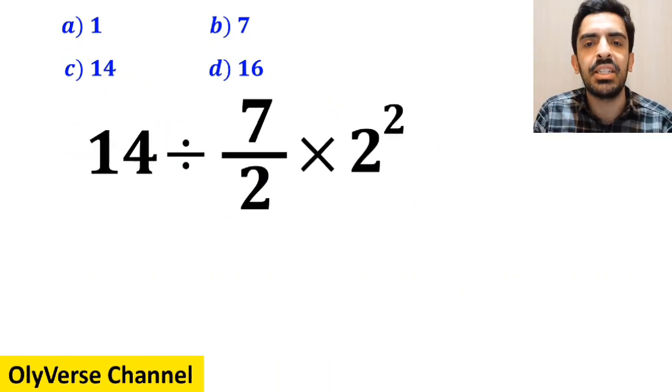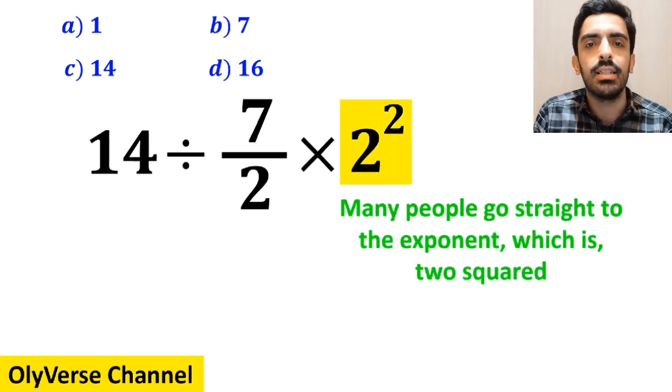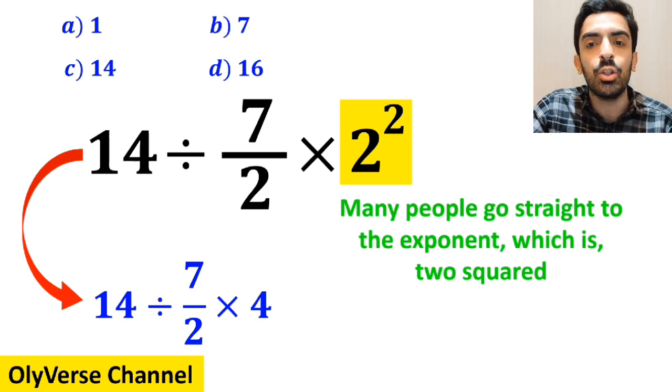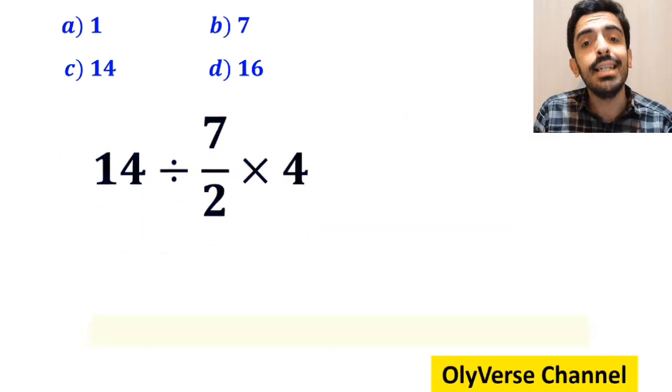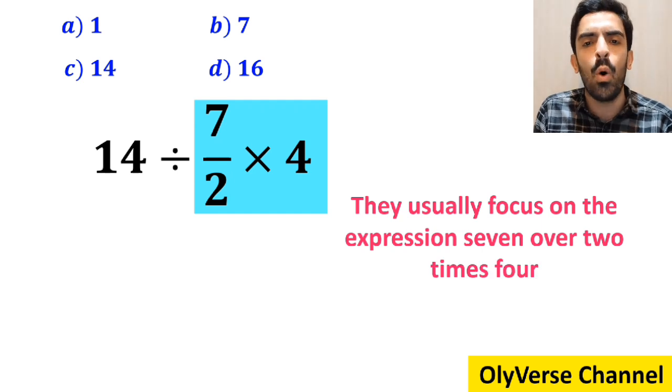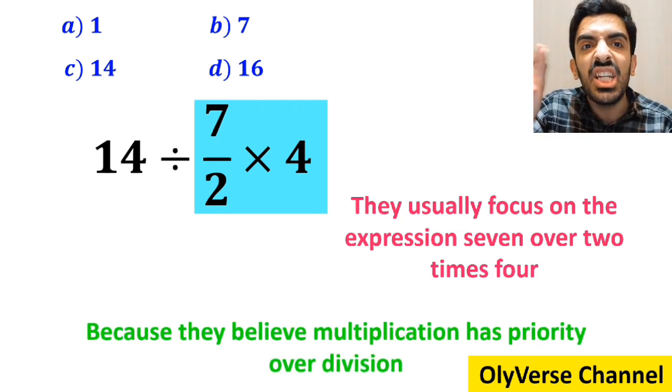In the first step of solving this question, most people go straight to the exponent, which is 2 squared, and they simplify the whole expression to 14 divided by 7 over 2 times 4. In the next step, they usually focus on the expression 7 over 2 times 4, because they believe multiplication has priority over division.